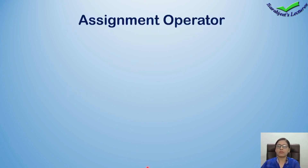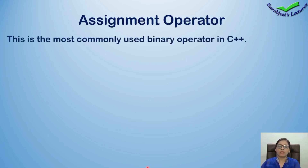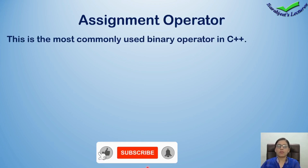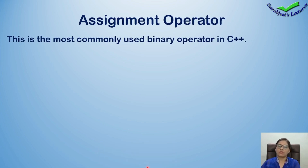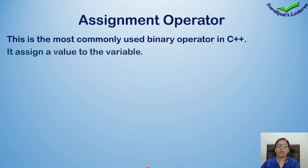Sabse pehle hum dekhenge assignment operator kya hota hai. This is the most commonly used binary operator in C++. Binary operator ka matlab hota hai aisa operator jo dho operands ke saath work karta hai. Dho operands matlab dho variable ho sakte hai, dho constant ho sakte hai. To aisa operator jo dho operands ke saath work kerta hai, usse assignment operator kehte hai.